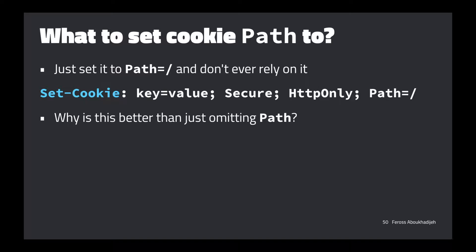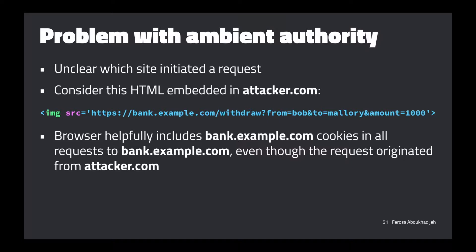There's one other general problem with the whole cookie design, which is one of the benefits of ambient authority: every request you make automatically has the authority of this cookie. But it can create problems when the browser helpfully includes cookies in requests you wouldn't expect. Say we're on attacker.com — we clicked a link, ended up on a sketchy site. This site embeds an image that goes to a URL attempting to withdraw $1,000 from Bob's account to Mallory's account.